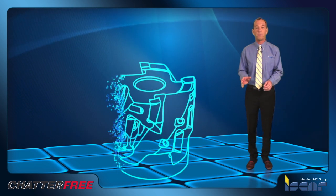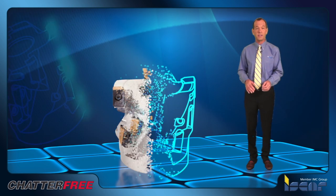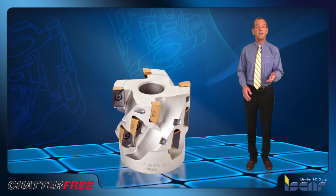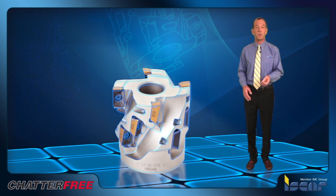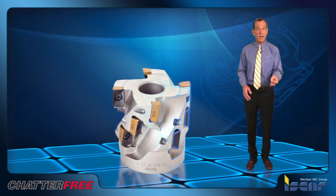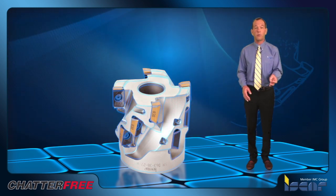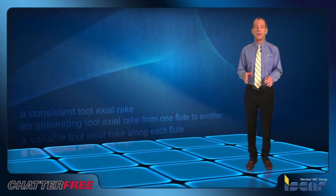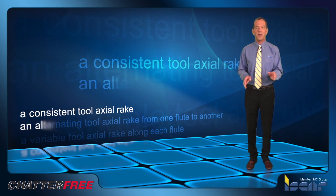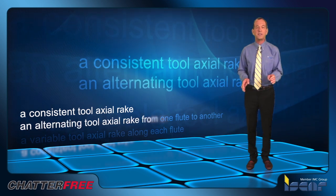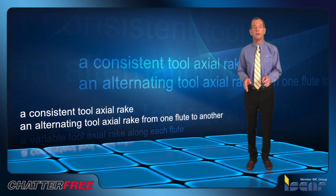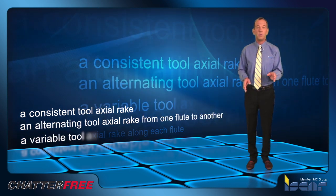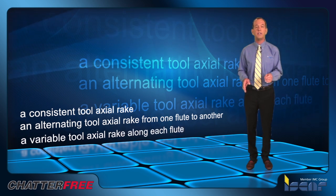The new approach is a good base for producing vibration-proof milling tools, especially for extended flute indexable cutters. It opens several options for varying the cutter geometry only by changing the order of mounting the inserts: a consistent tool axial rake, an alternating tool axial rake from one flute to another, or a variable tool axial rake along each flute.